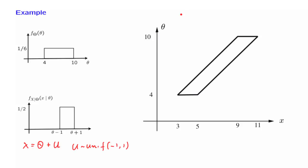From this model here, we know that theta minus 1 is going to be less than or equal to x, and x is going to be less than or equal to theta plus 1. And we translate this into two inequalities, namely that theta is less than or equal to x plus 1, and from here, that theta is larger than or equal to x minus 1. So these are the constraints that we have on the possible values of x and theta.